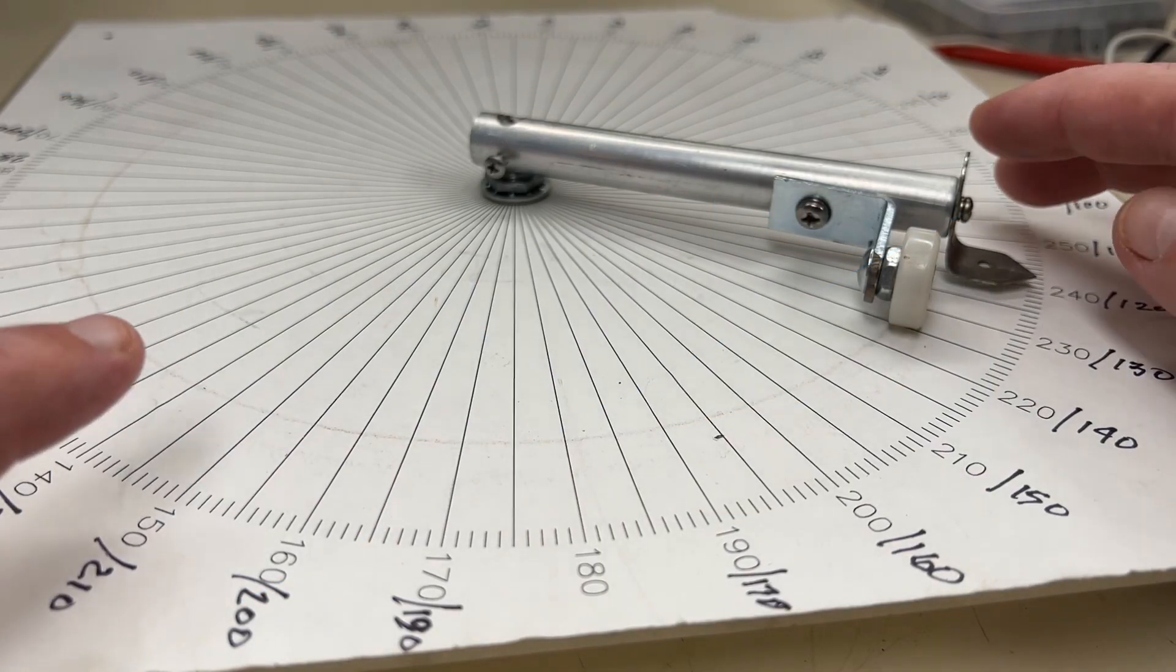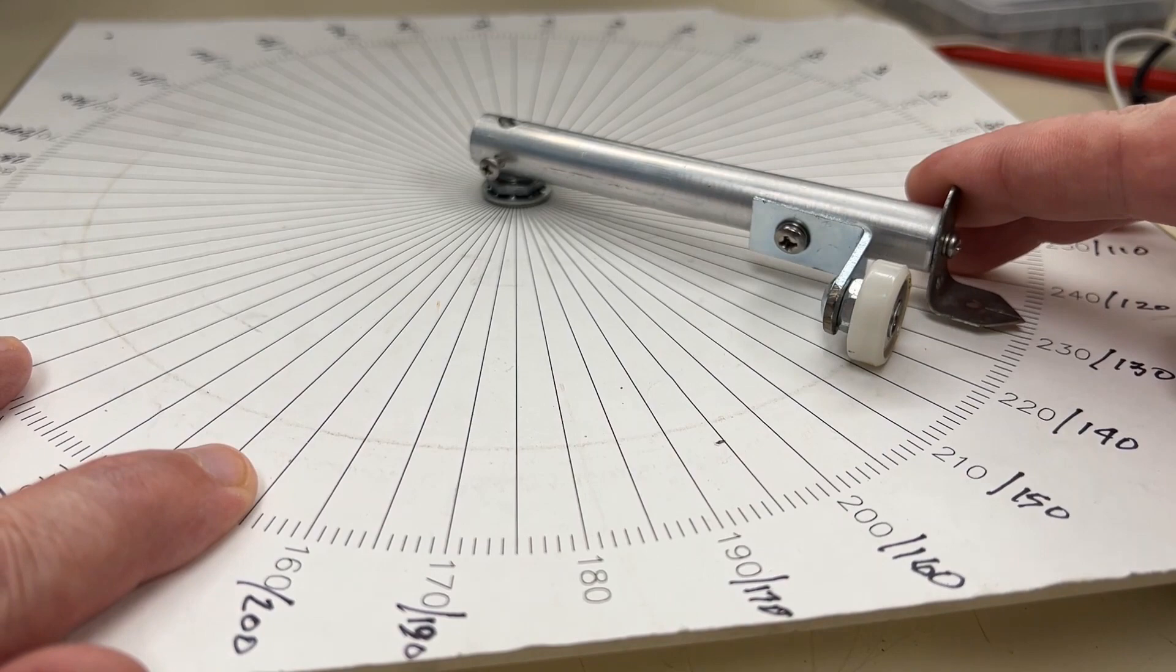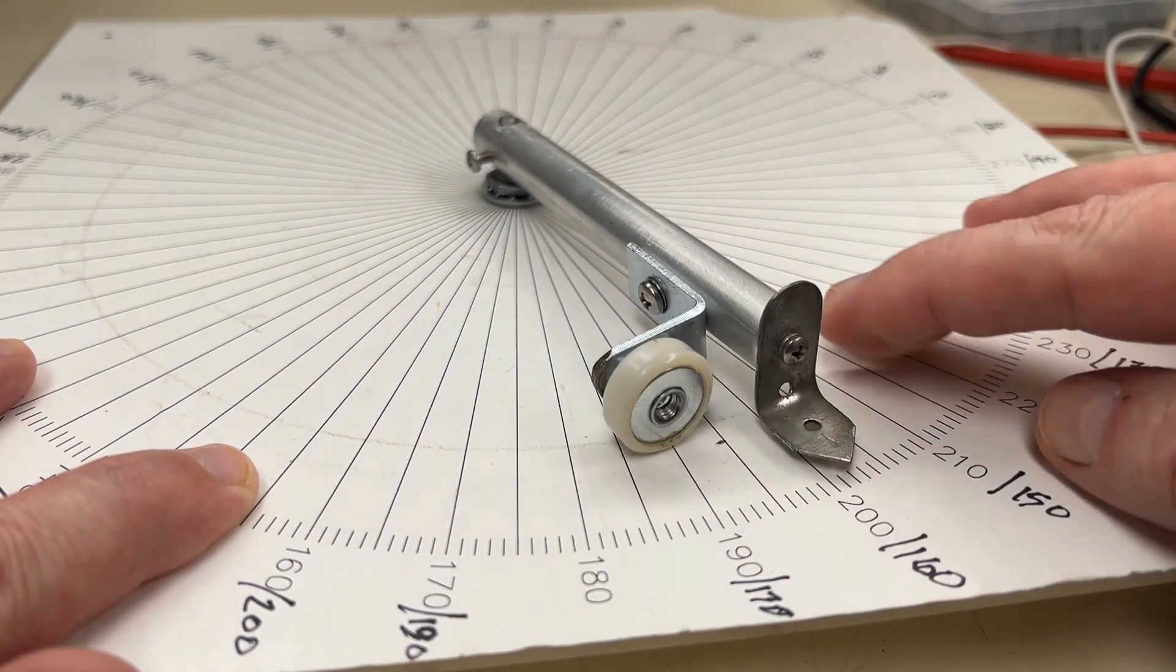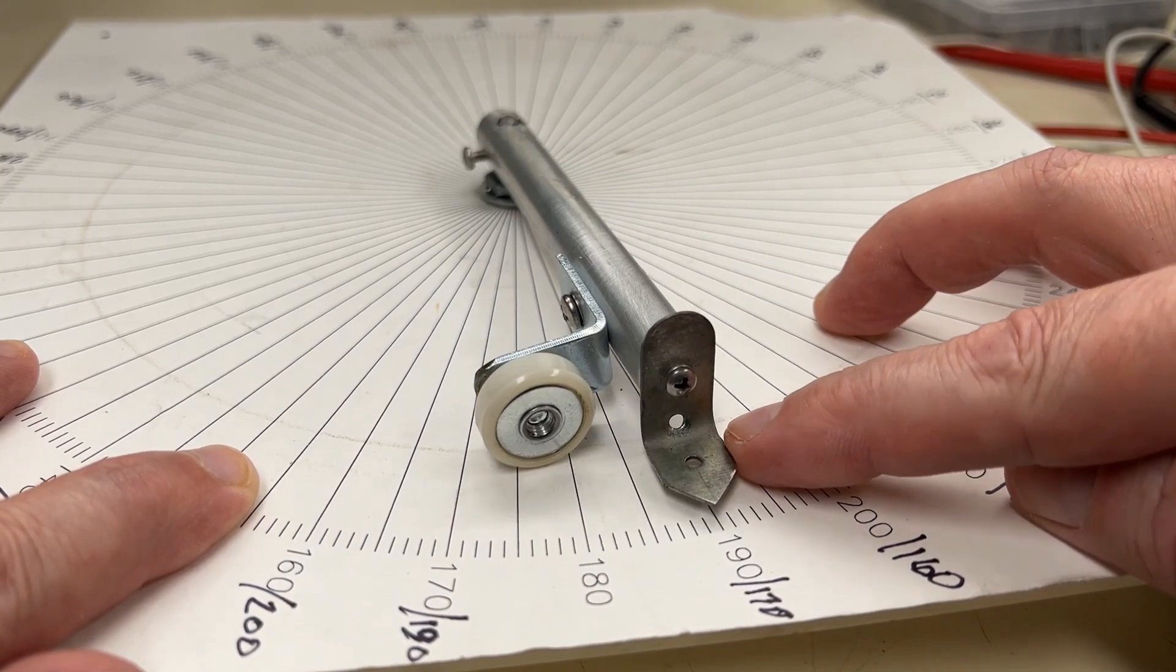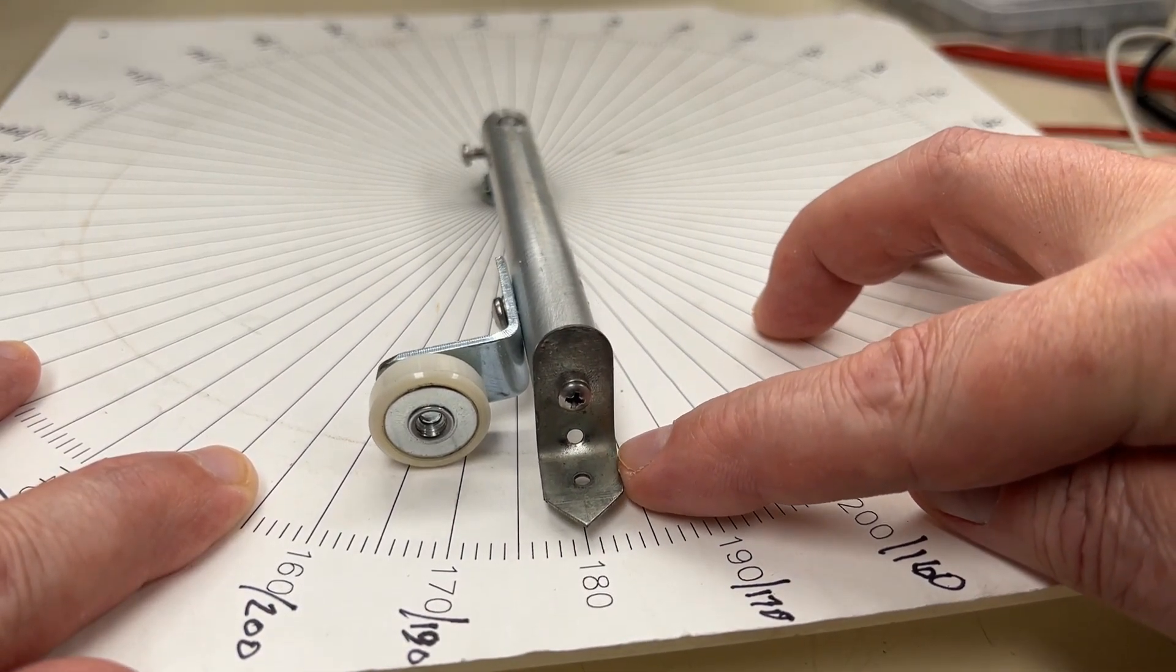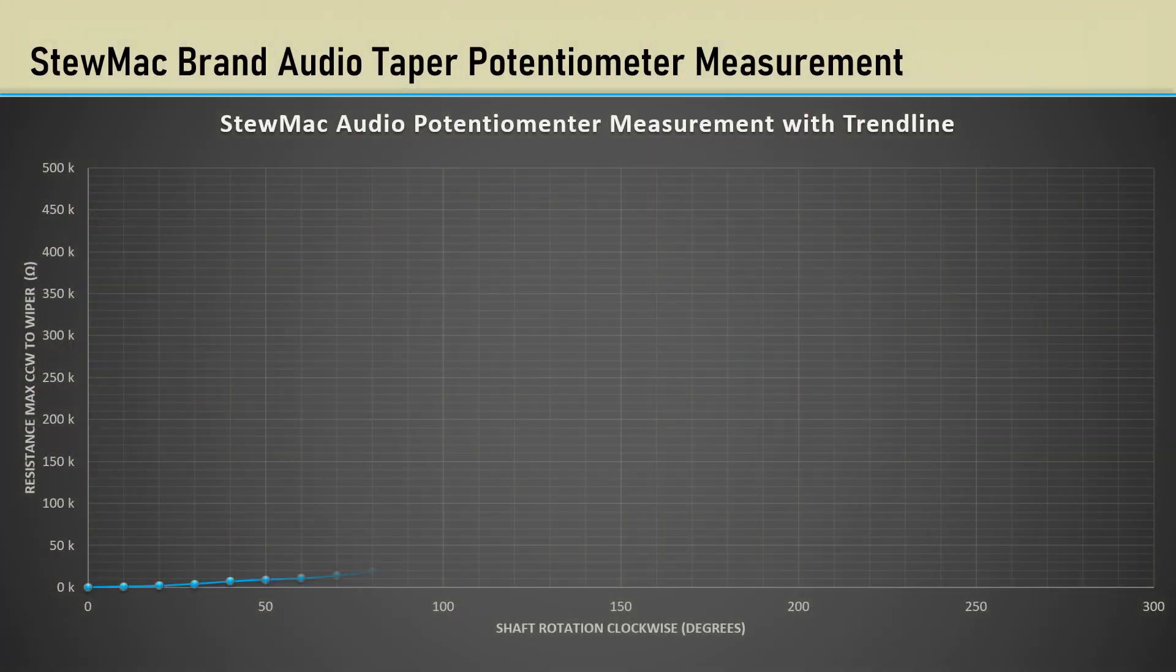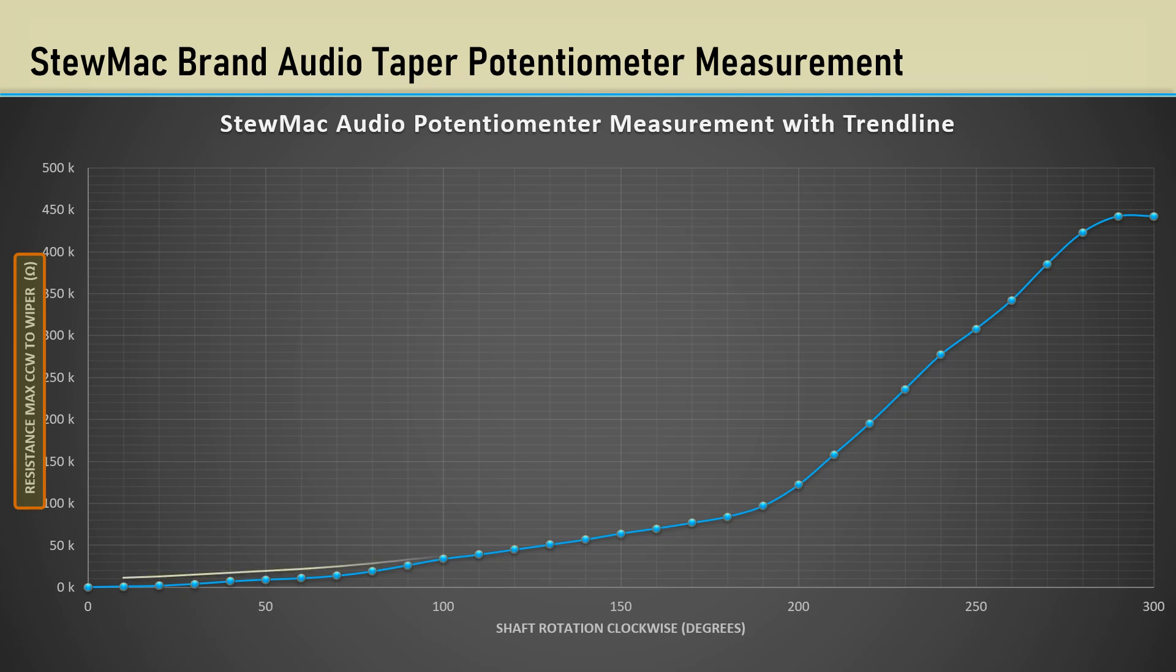I threw together a contraption for measuring the resistance of rotary pots capable of adjusting the shaft rotation in 1 degree increments. However, I chose not to make the measurements to such a small resolution. Here's the measurements of a Stumac 500k pot. It's the resistance between the max counterclockwise terminal and the wiper over the 300 degree span of rotation. I attempted to construct an exponential trend line to match the data. It's obvious that constructing a resistance track with a continuously varying resistivity would be quite onerous.